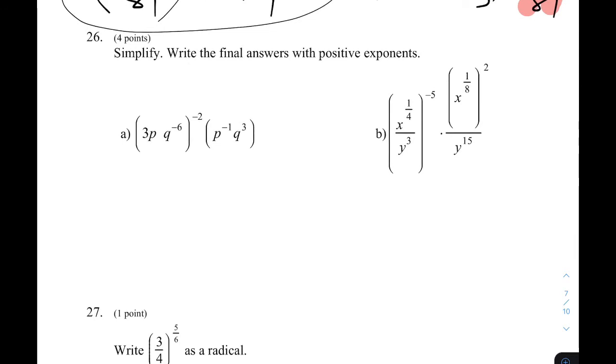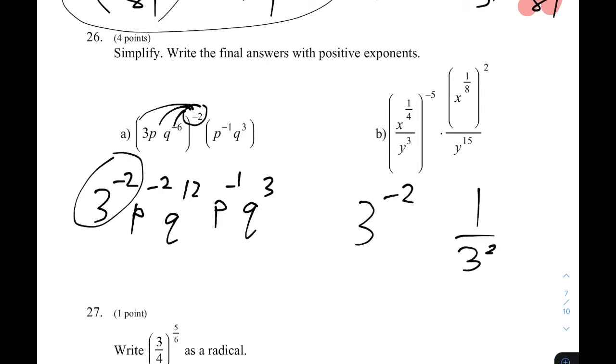For question 26, simplify and write with positive exponents. For the first one, I have this that I need to send out to all of its players there. So I have 3 to the negative 2, P to the negative 2, and Q to the negative 6 times negative 2, which is positive 12. And over here I have P to the negative 1, and Q to the 3. So 3 to the negative 2, just for the number part, 3 to the negative 2 is the same as 1 over 3 squared, which is the same as 1 over 9. So I'm going to write 1 over 9 off to the side here somewhere, so I don't remember what's going on with that number part. 1 over 9.